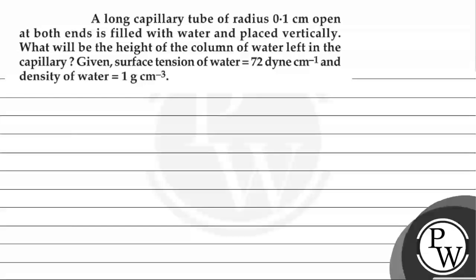The question says that a long capillary tube of radius 0.1 centimeter, open at both ends, is filled with water and placed vertically. We need to find the height of the column of water left in the capillary. The surface tension of water is 72 dynes per centimeter and the density of water is 1 gram per centimeter cube.